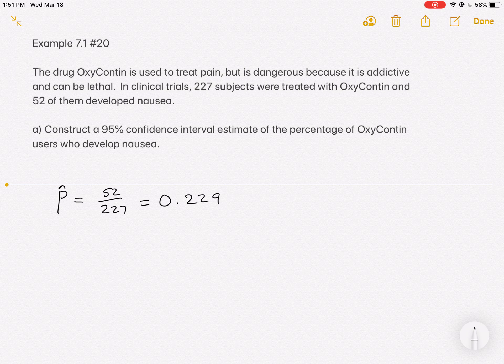So that's going to be our base. Our end answer in terms of the confidence interval estimate is going to be 0.229 plus or minus an error. We know that it's not perfect because we didn't look at every OxyContin user. And we're seeing that of the ones we did, roughly 23% experienced nausea.